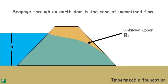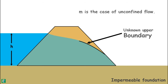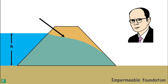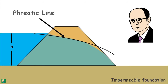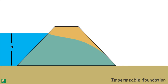In unconfined flow, the upper boundary — the top flow line — is not known. Casagrande observed that the shape of this top flow line, also called the phreatic line, is close to a basic parabola for most of its length. He recommended it can be taken as a basic parabola with necessary corrections at the upstream and downstream faces, so that it conforms to the basic conditions of the flow net — flow lines should be perpendicular to equipotential lines. To obtain the phreatic line, we first draw the base parabola.